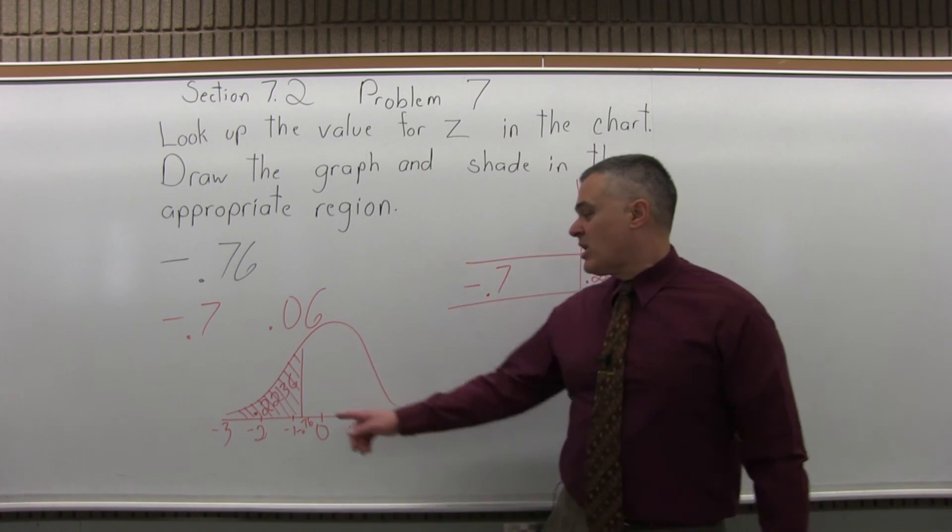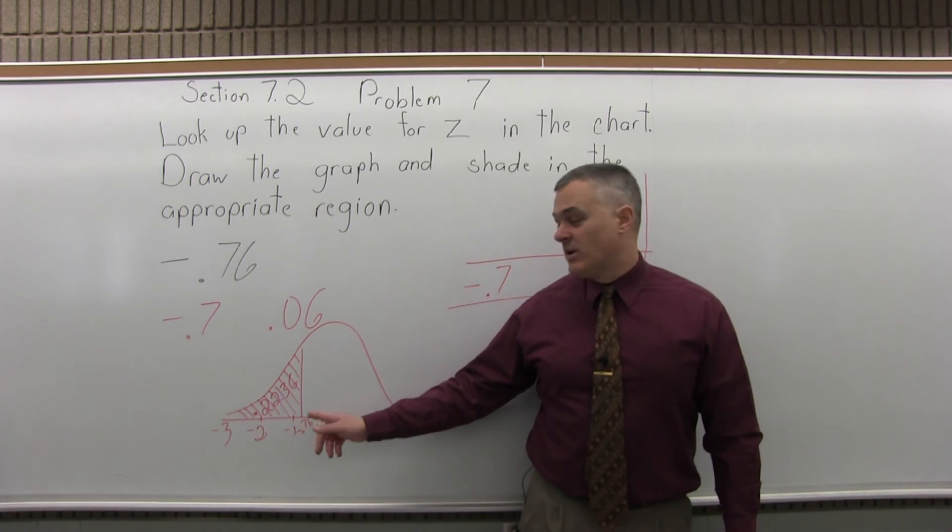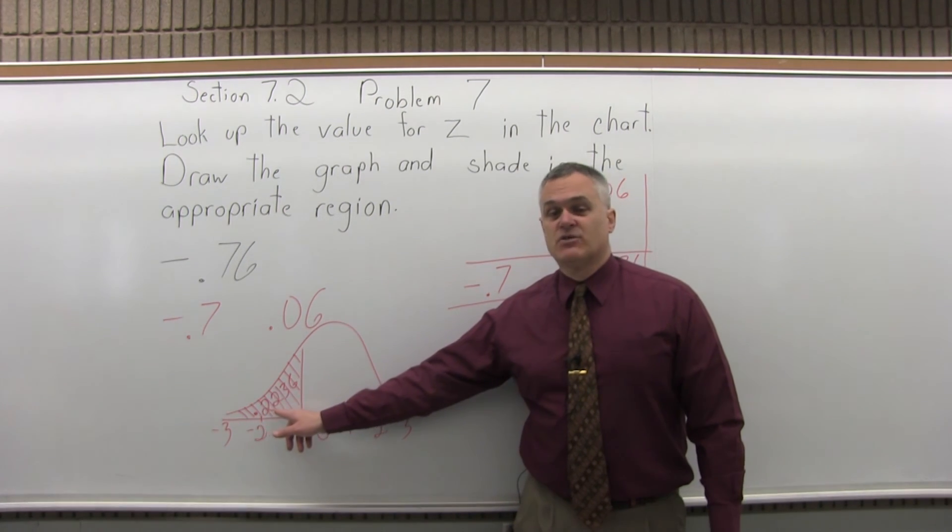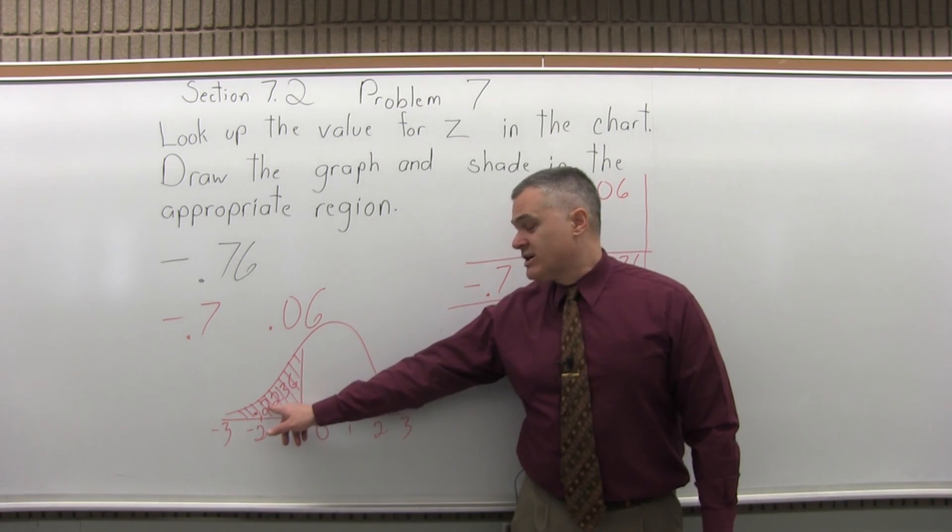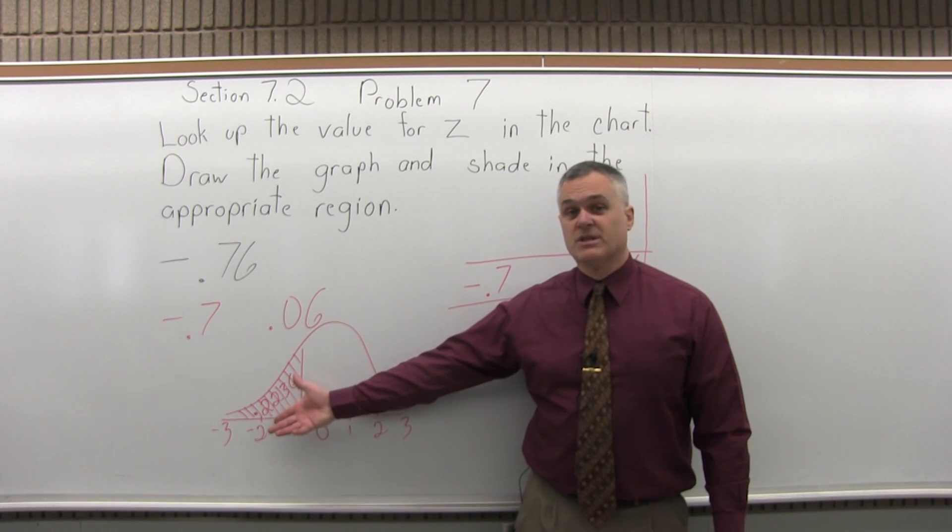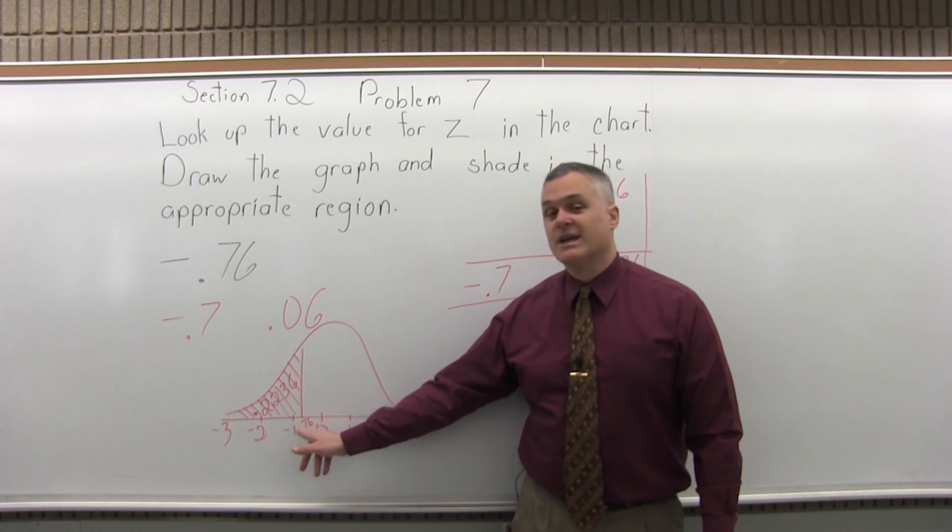So there's a 22% probability, about 22 and a third percent probability, of being in that shaded region. And the number you get from the chart is positive. It is a probability. Probabilities can't be negative, even though we looked up a negative value.